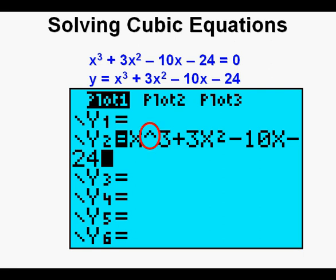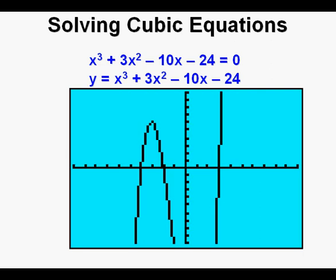This symbol, the caret or rooftop key at the right side of the keypad just below the clear key, it means to the power of, in this case to the power of 3. To graph, press graph or press zoom 6 to assure a standard window.